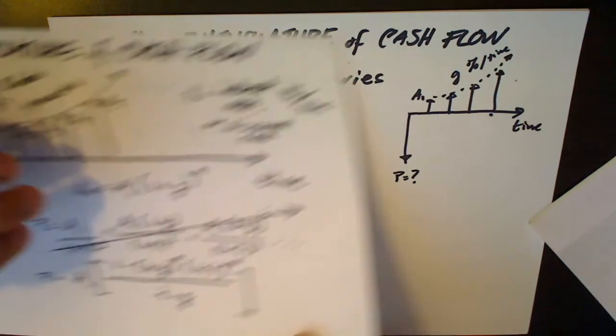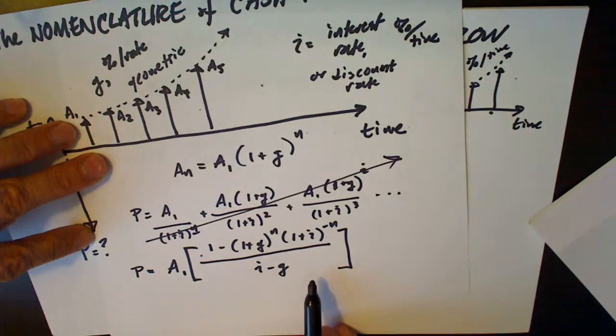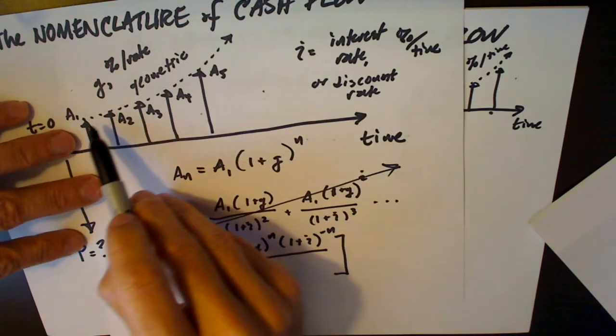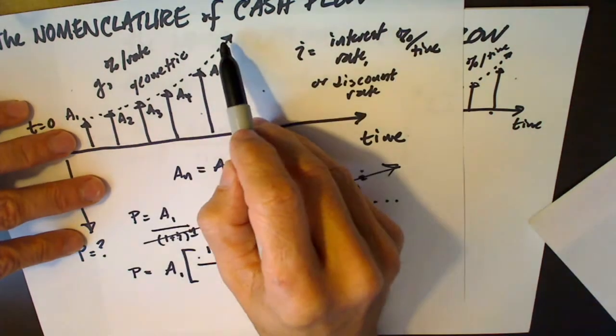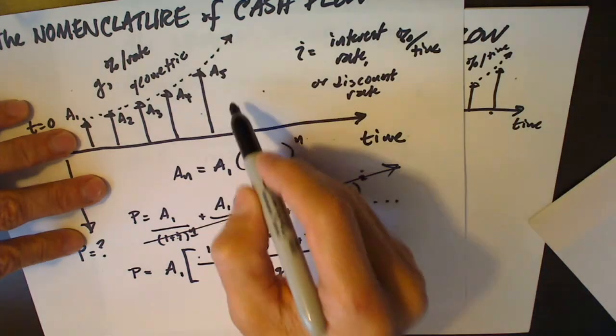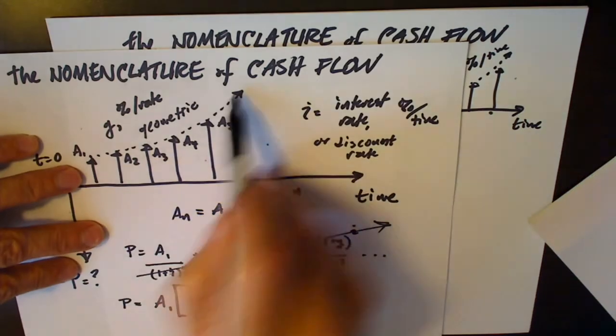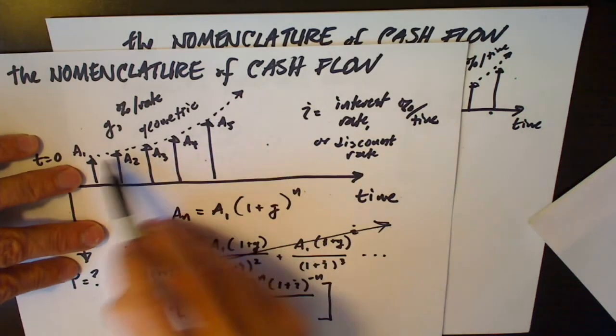In our previous video we noticed a problem with this present worth factor that we were using to discount a geometric gradient series to present value. The special problem was in this case where the discount rate I that we used to discount future values to present value equals the increase, that is the growth rate of these future payments.